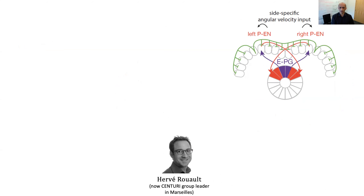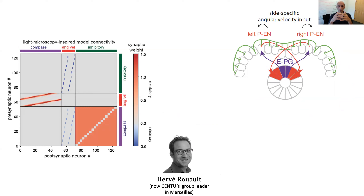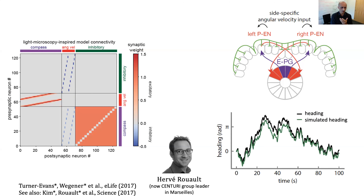Hervé Rouault, then a research associate at Janelia and now a group leader in Marseille, formalized this in a discrete ring attractor model with one additional tweak: inhibition. In order for the ring attractor to stabilize and have only one bump, we need inhibition in the picture. Using connectivity inspired by light microscopy, he constructed a matrix with connections between compass neurons, angular velocity neurons, and near-uniform inhibition. He could simulate activity that looked pretty good — essentially simulating angular velocity integration by sending in angular velocity inputs, and the ring attractor would track velocity pretty well.